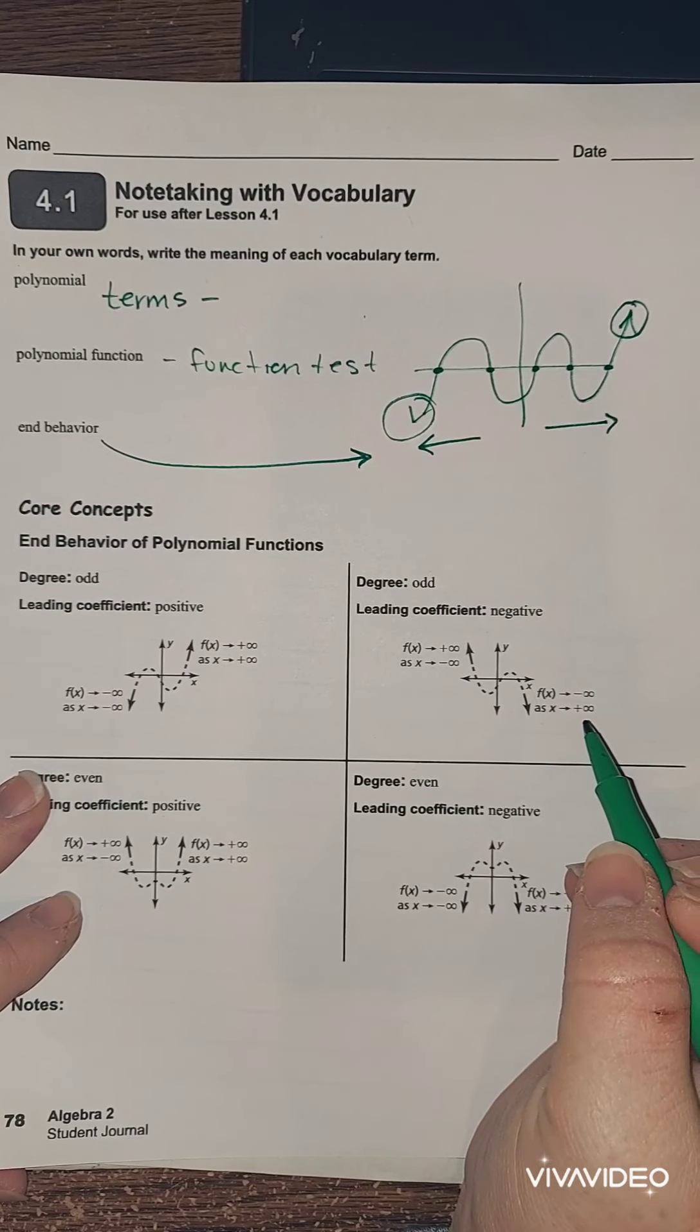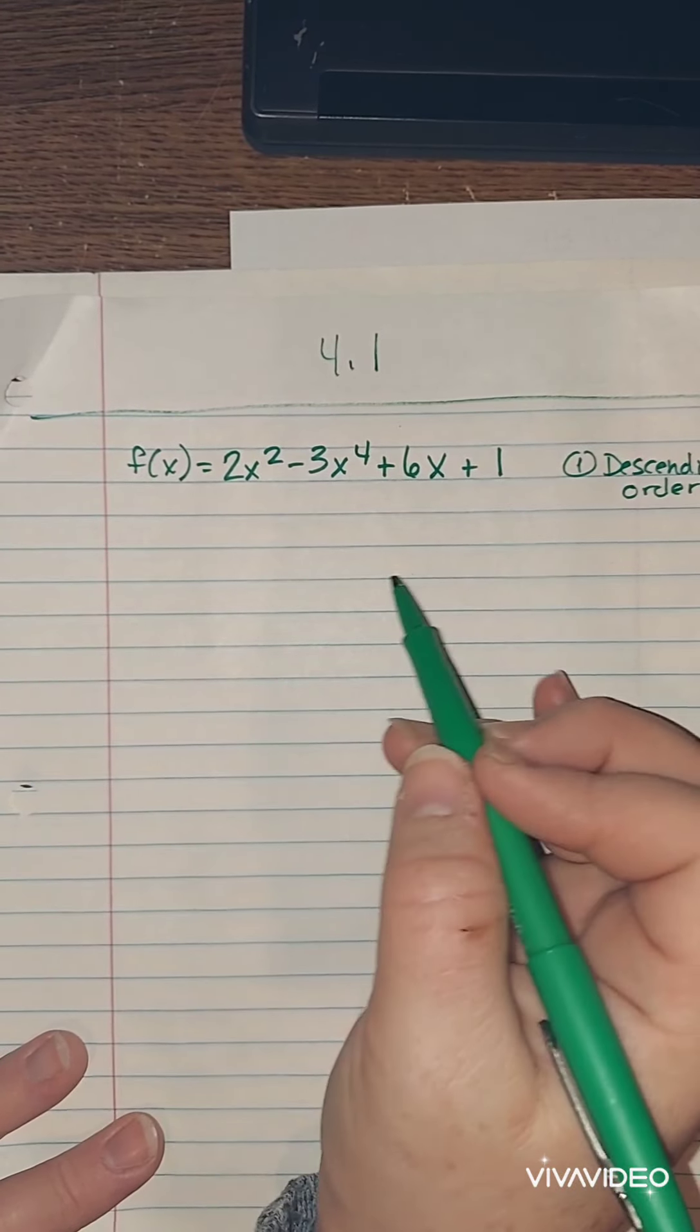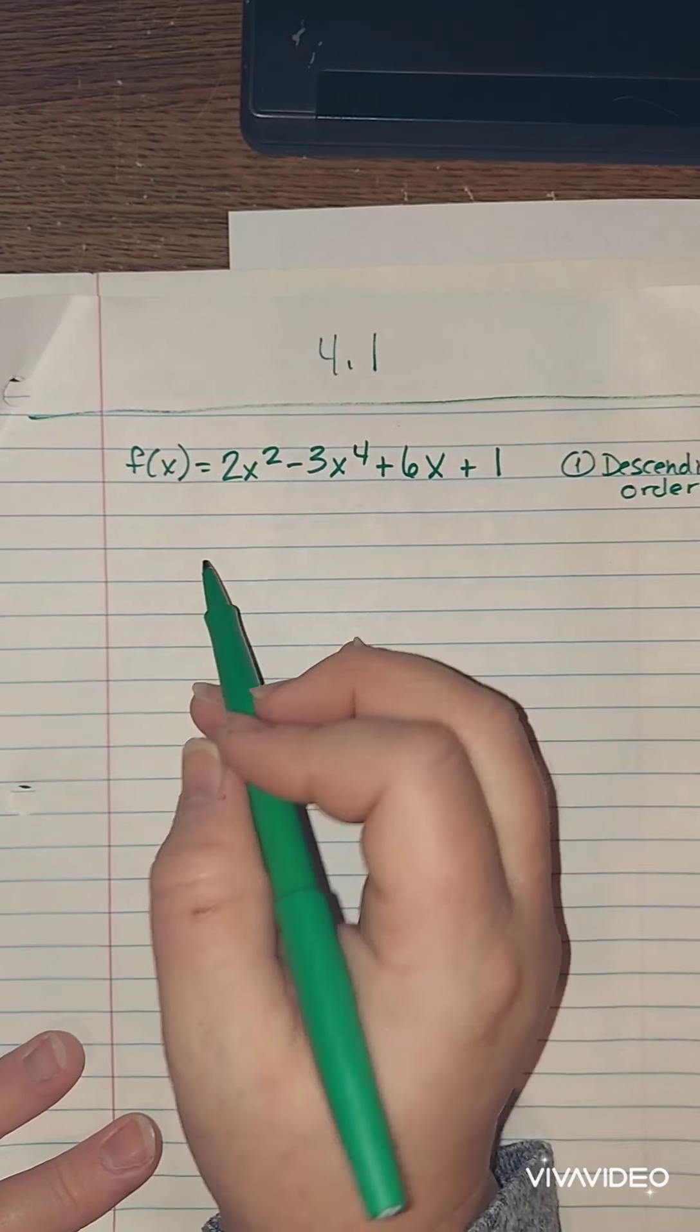So I'm going to go to this page, or you could go on the back side of your page here. Okay, and I'm going to just label this 4.1. And the first thing I want to talk about is getting that polynomial organized. Okay, so given a polynomial function, okay, so it's a function because I see f of x. I'm going to write down some of the steps. Okay. So one of the first things you want to do is put your polynomial in descending order.